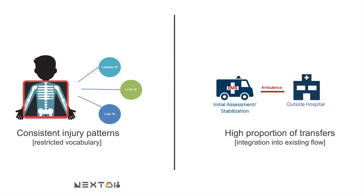This leads to a unique situation with two characteristics that allow for automated clinical analytics. First, injury patterns are consistent. Because of mechanism, a patient can present with an injury pattern relatively associated with other injuries. This consistency allows us to generate a correlation matrix for that specific patient population across hundreds of thousands of trauma registry data sets. This also allows clinical decision support, and it assists with the NLP problem because trauma uses a generally restricted vocabulary.